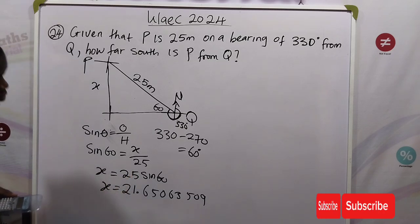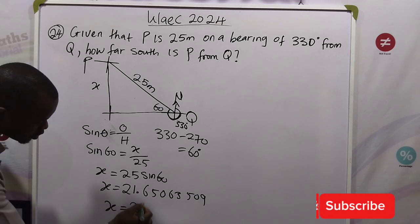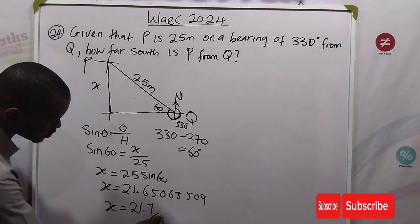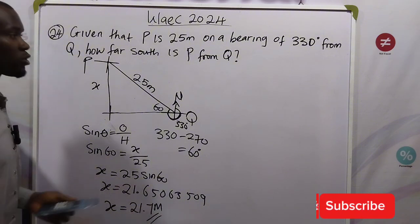Then approximate to, we are not going to approximate to any distance at all. So let's take one decimal place. So we have 21.7, and that is measured in meters. So this becomes our answer.